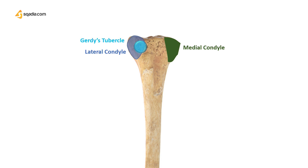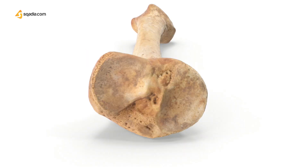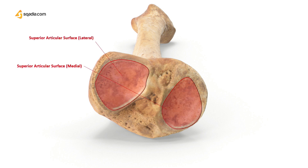If we rotate the tibia to look at the superior surface of the medial and lateral condyles, these surfaces are articular — meaning they join with other bones. These surfaces will articulate with the lower end of the femur at the level of the knee joint.